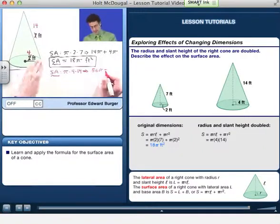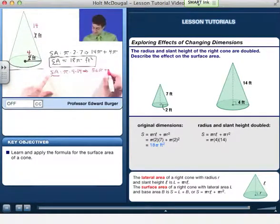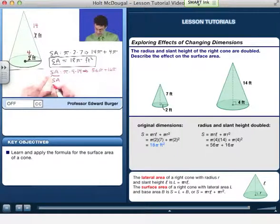But then I've got to add on the area of the base, which is πr², but now the r is 4, so that's going to be 16π. And so I see now the new surface area is going to equal this sum, which is 72π feet squared.